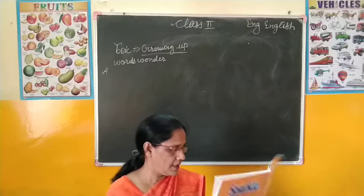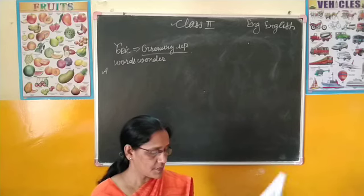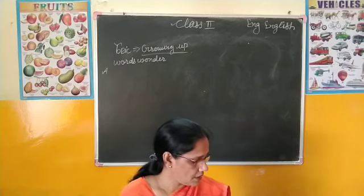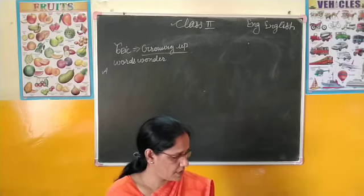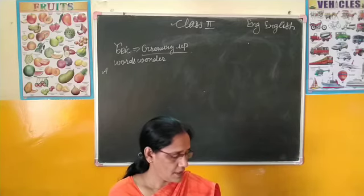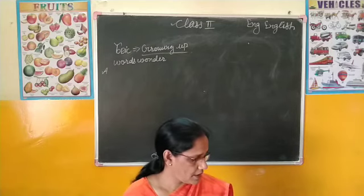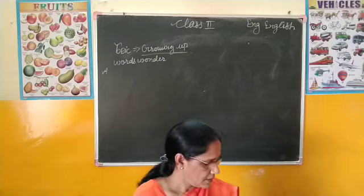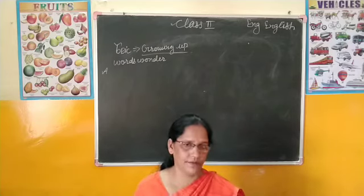व्यवस्थित तरीके से लिखना है कि कौन किसके बाद आता है। इसमें नाम हैं: Vishal, Gaurav, Dheeraj, Seemi, Aro, Manish, Aman, Rashmi, Suman, Priyanka, Bhumika, Himani, Anita, Navya, Sumit.